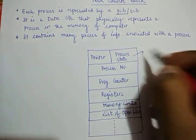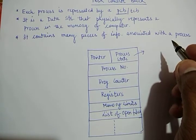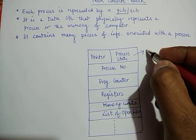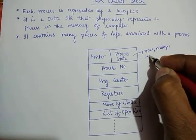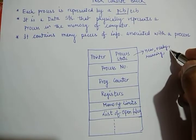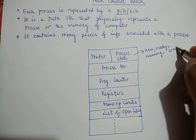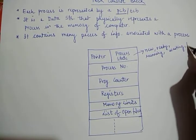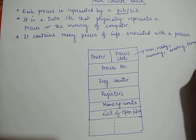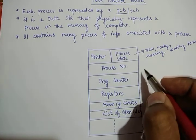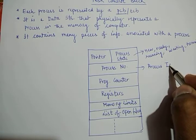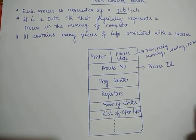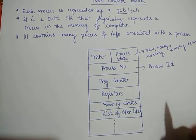The process state field refers to what we discussed in the last lecture — the process life cycle or process state transition diagram. The states may be new, ready, running, waiting, and terminated, etc. The process number denotes the process ID, which the computer system allocates to a particular process, just like row numbers in a class. Every process contains a unique ID, which is denoted by this process number.